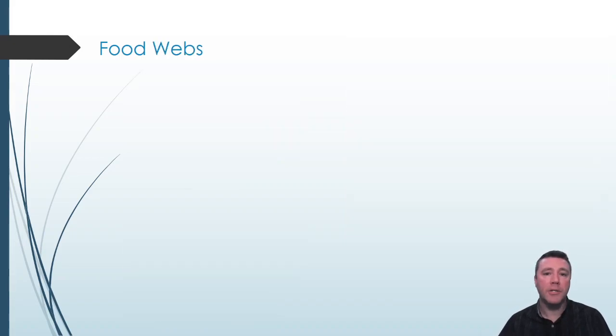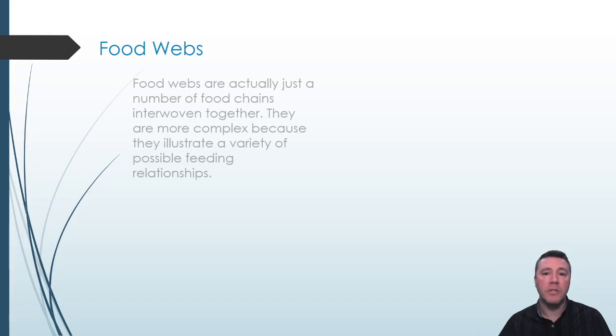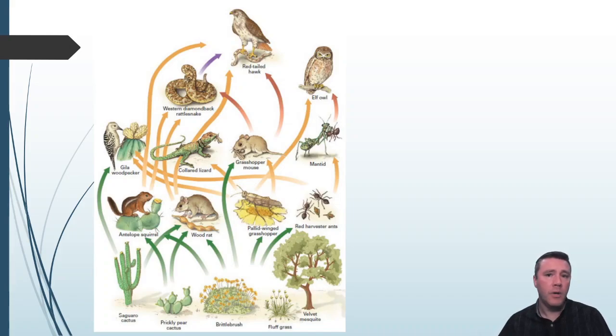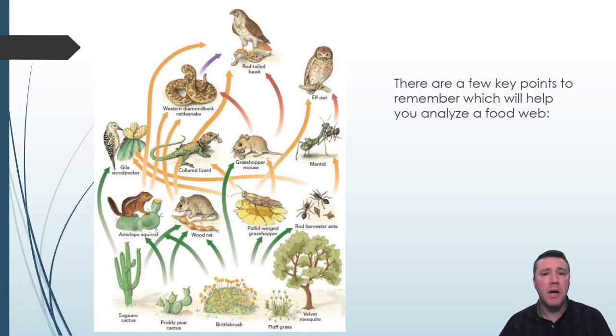A food web is actually a bunch of food chains woven together. They are more complex and show multiple pathways for the transfer of energy rather than the single path shown in a food chain. Although you would never be expected to have memorized a specific food web, keeping a few things in mind will make it possible for you to analyze any food web. The producers will never have arrows pointing to them. They obtain energy from a non-living source, the sun.